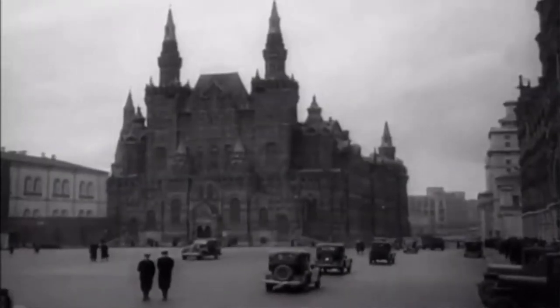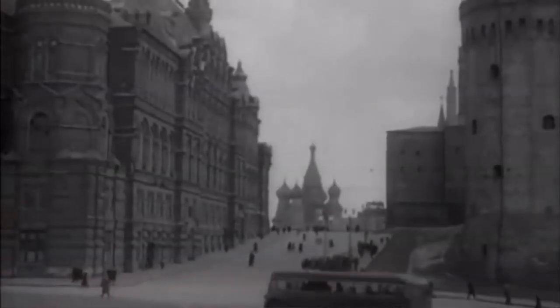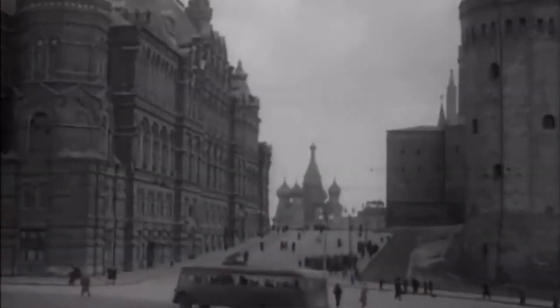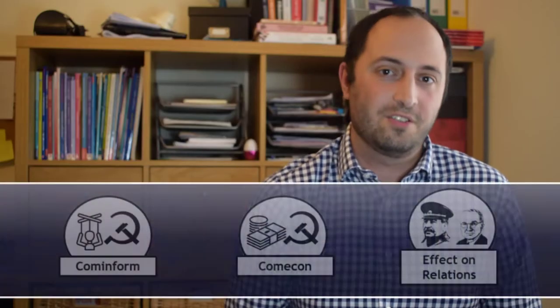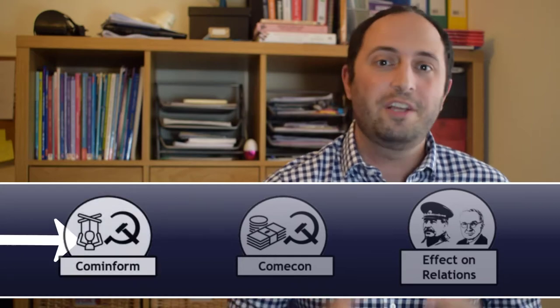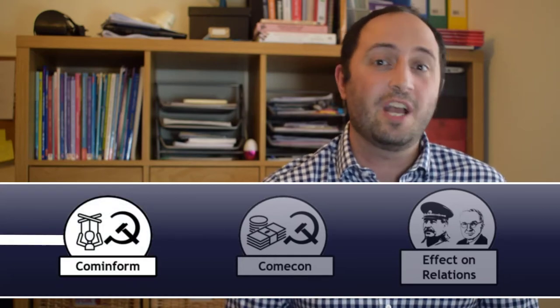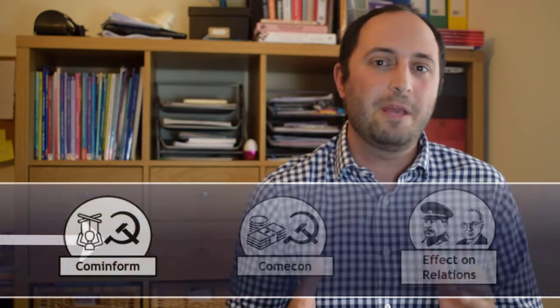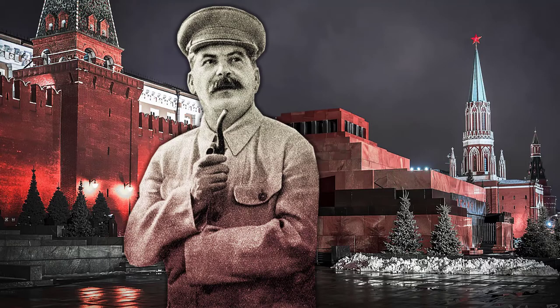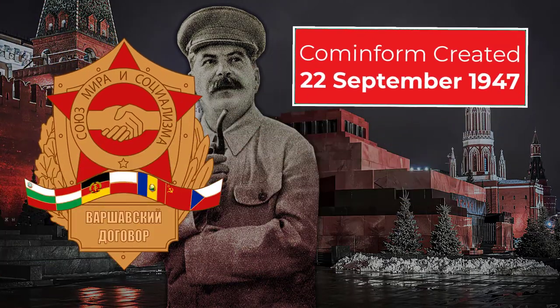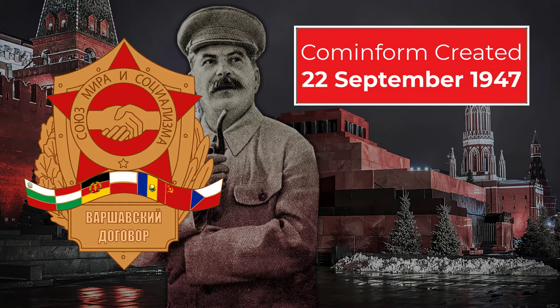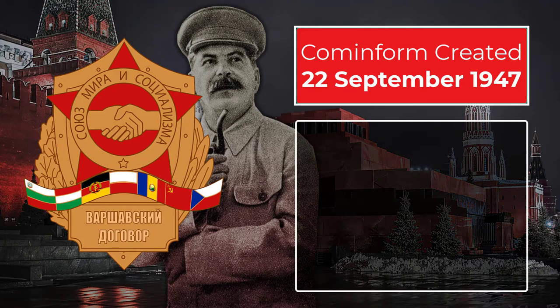Marshall Aid was a challenge to Stalin, and so Stalin needed to answer the challenge in his own way. He set about creating a new organization that would help him unify and coordinate all of the communist countries. And so it was, on the 22nd of September 1947, that Cominform was born.